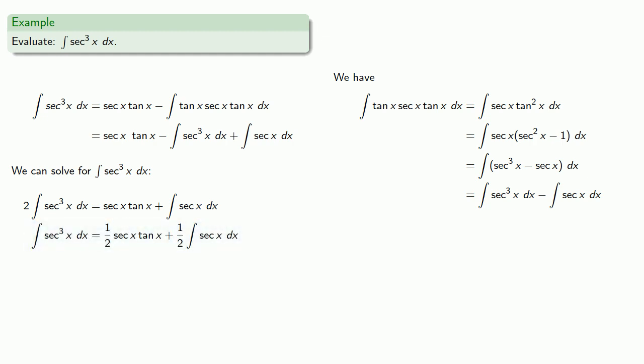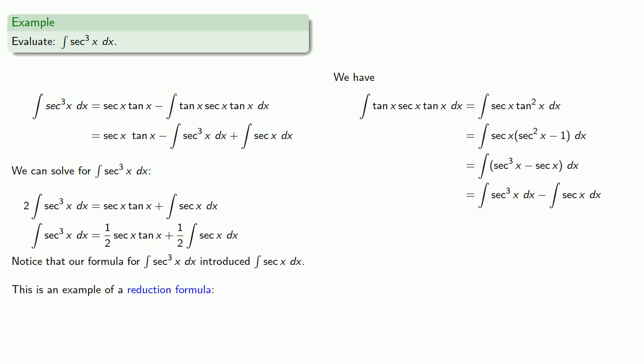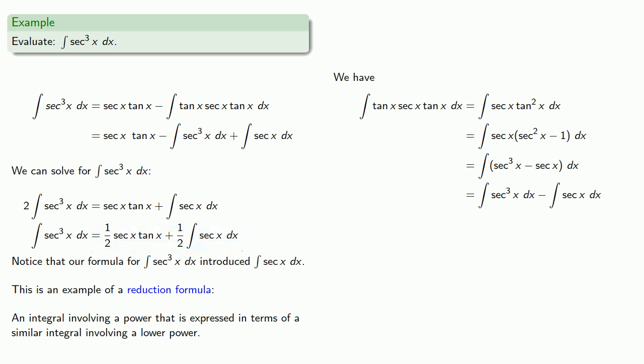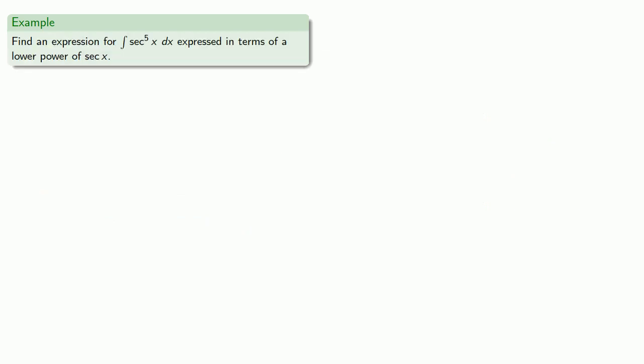Now we're not done yet, but here's the thing to notice: a formula for the integral of secant cubed introduced the integral of secant x. This is an example of what's called a reduction formula — an integral involving a power that is expressed in terms of a similar integral involving a lower power. For example, suppose we have to find an expression for the integral of secant to the fifth expressed in terms of a lower power of secant.